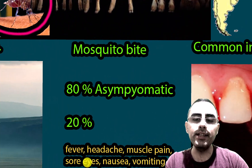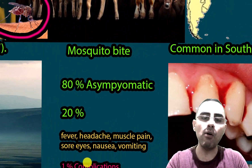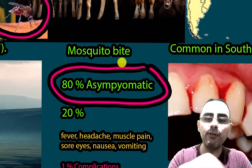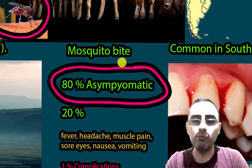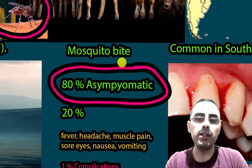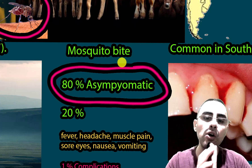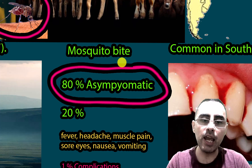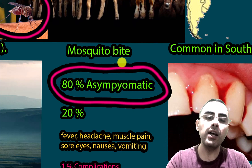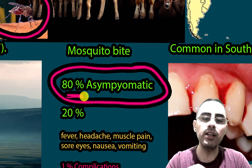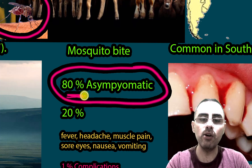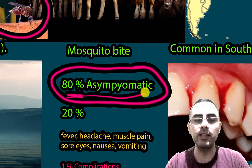In 80% of cases of Rift Valley Fever there are no symptoms, and people don't even know they have it. These cases are called asymptomatic.